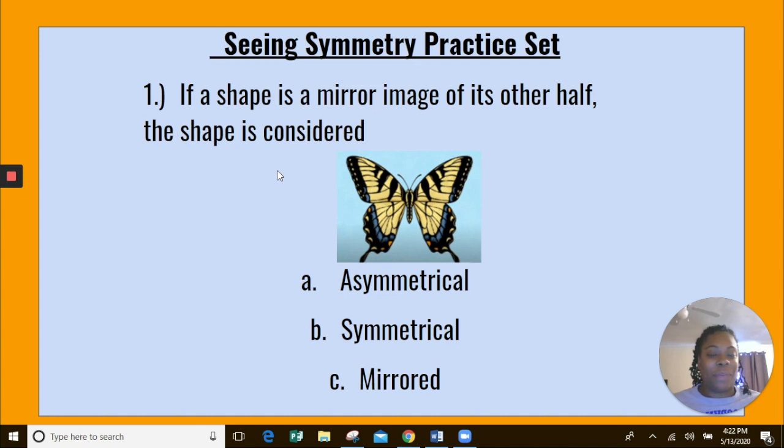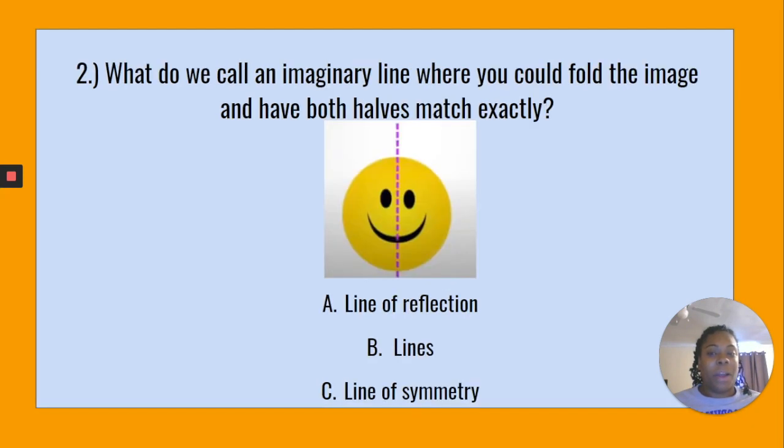Number two: What do we call an imaginary line where you could fold the image and have both halves match exactly? A. Line of reflection, B. Lines, C. Line of symmetry. Pause this video and choose your answer now.